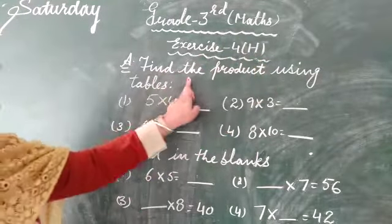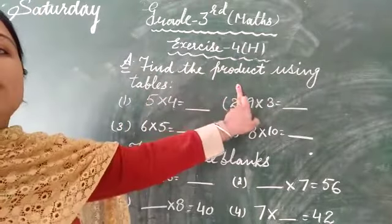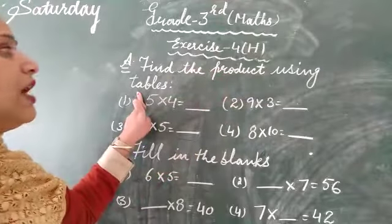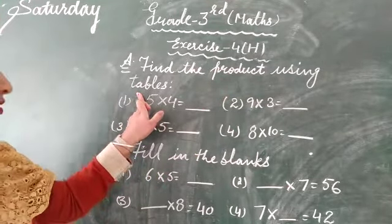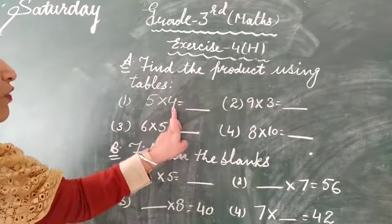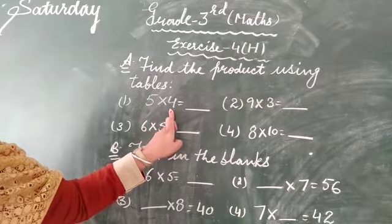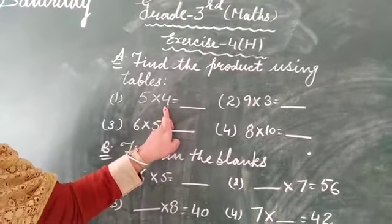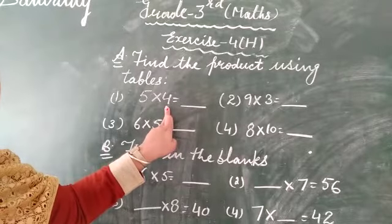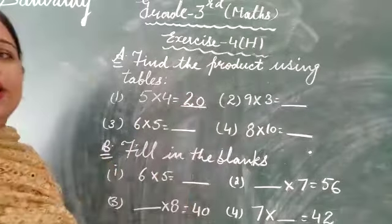Question is find the product using tables. Product means multiply. Means we have to read out tables and get our answer. First part is 5 multiply with 4. So start to read out table of 4. 4-1s are 4, 4-2s are 8, 4-3s are 12, 4-4s are 16, 4-5s are 20. So your answer is 20 here.